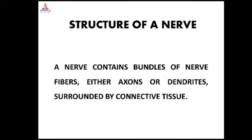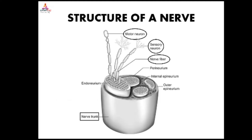The structure of nerves: a nerve contains bundles of nerve fibers — either axons or dendrites — surrounded by connective tissue. In nerves, the components include the motor neuron and sensory neuron, nerve fibers, perineurium, outer epineurium, endoneurium. This forms the nerve trunk.